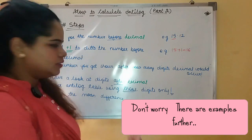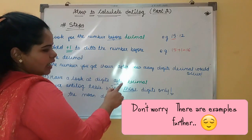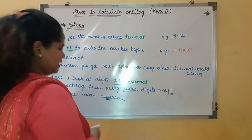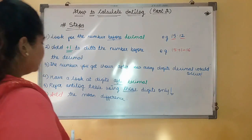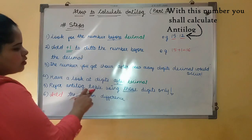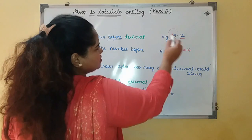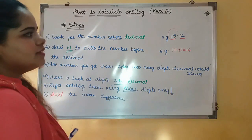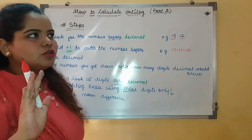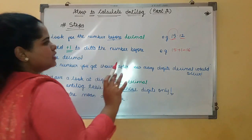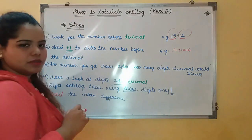You can see it in the example. If you have a doubt please do comment. Then have a look at the digits after the decimal. Now have a look at the digits which are after the decimal, which is 12. Then refer to the antilog table using those digits only. You have to use the number before the decimal just to find after how many digits your decimal would occur, and you find antilog using the digits which occur after the decimal point.